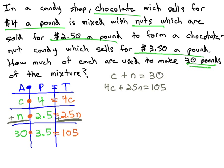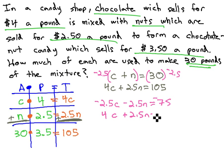We now have a system of equations with two variables, which we can solve quickly by getting opposites in front of N, multiplying by negative 2.5. And the first equation becomes negative 2.5C minus 2.5N equals negative 75. The second equation, 4C plus 2.5N equals 105. We now have the opposites we want in front of the N, so we end up with 1.5C equals 30.